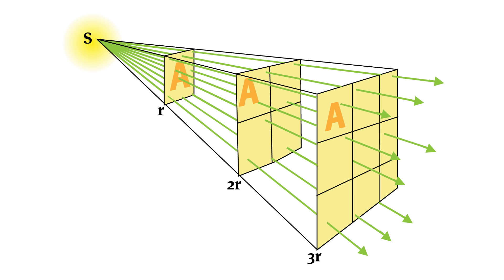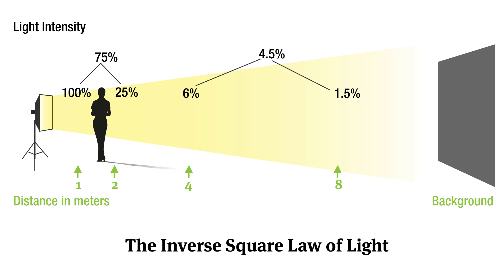So in this first graphic you can see the distance represented as r, and if we double r — double the distance — you can see quarter of the power of light hitting our subject. The next graphic is more important to photographers. This graphic represents the light intensity. If we look at the distance at the bottom there in one to two meters where our model is positioned,